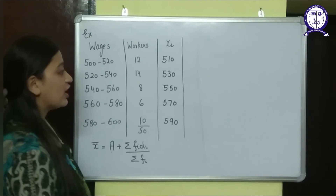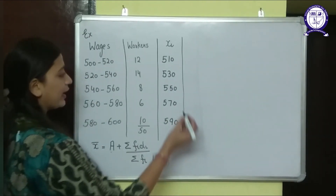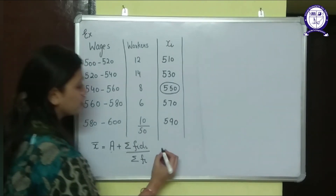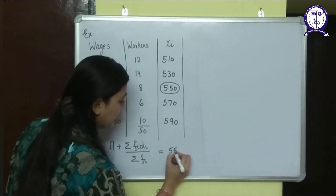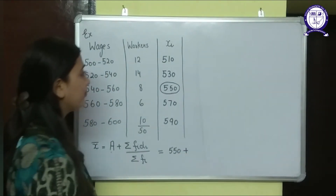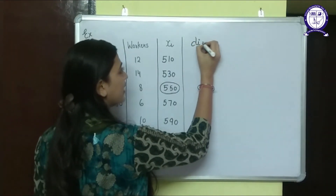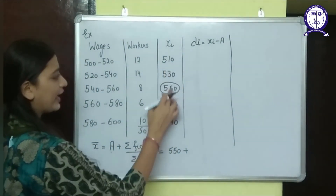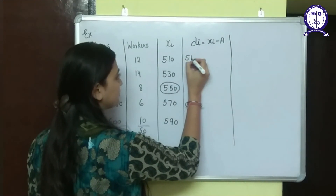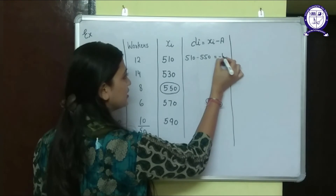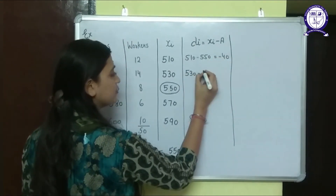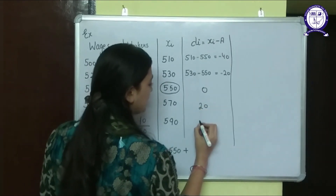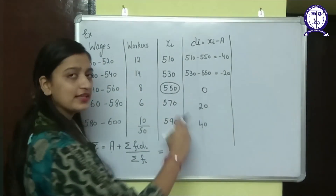Since the x_i values are very large, multiplying them would take a lot of time, so we apply the assumed mean method. I assume the mean A = 550, taking the mid-value. Now I find d_i = x_i − A: 510−550 = −40; 530−550 = −20; 550−550 = 0; 570−550 = 20; 590−550 = 40.